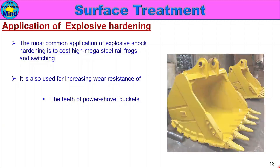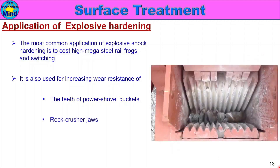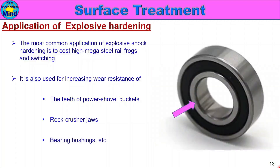It is also used for increasing wear resistance of rail frog material. Other applications include the teeth of power shovels, rock crusher jaws, and bearings and bushings — anywhere wear resistance is required. This concludes the Surface Treatment Part 4 video covering deep rolling, shot blasting, and explosive hardening. If this video was useful, please like, share, and subscribe, and press the bell icon.